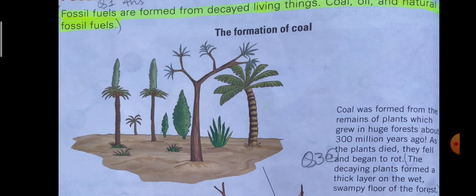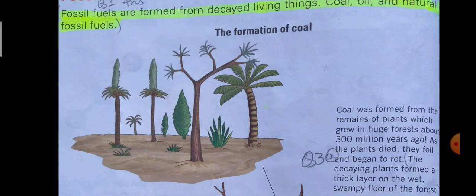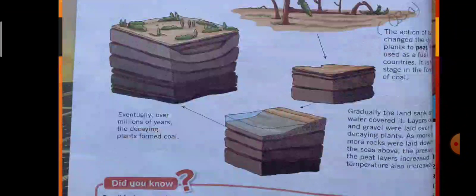The action of bacteria decomposed this thick layer of dead plants and animals, changing it into peat. So the first stage of coal formation is carried out by bacteria, which decompose the dead bodies and structures of plants and animals, transforming them into peat.